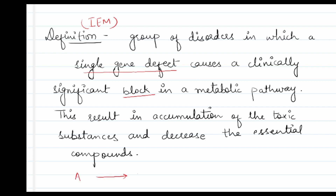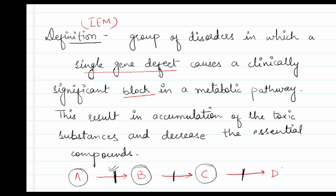What is meant by a block? Consider a metabolic pathway where A converts to B, B converts to C, and C converts to D. If there is a deficiency of the enzyme converting B to C, this pathway is blocked. B will accumulate. Similarly, if the enzyme converting C to D is deficient, C will accumulate. D may be the excretory form or an essential compound. A single gene defect causes this significant block in a metabolic pathway.